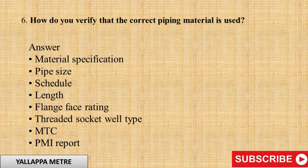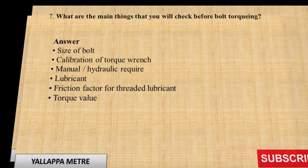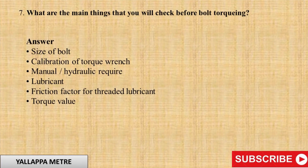Question 6: How do you verify that the correct piping material is used? Answer: Check material specification, pipe size, schedule, length, flange face rating, threaded or socket weld type, MTC (material test certificate), and PMI report.